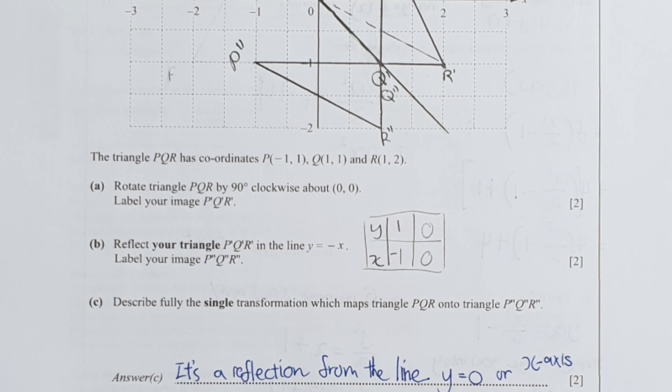Describe fully a transformation where PQR equals P double prime, Q double prime, and R double prime. So it is a reflection from the line y equals 0, or you can name y equals 0 as x axis.